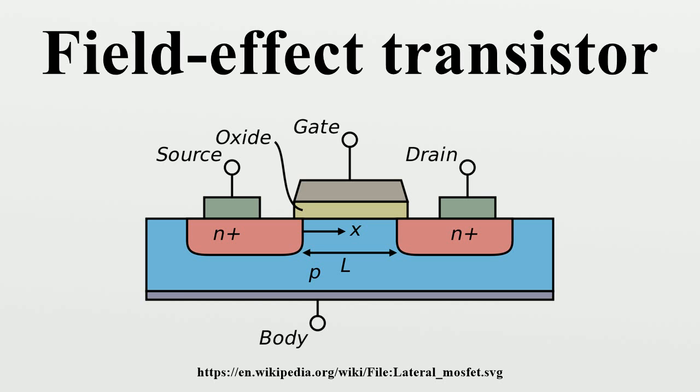Types of FETs include: The JFET uses a reverse-biased PN junction to separate the gate from the body. The MOSFET utilizes an insulator between the gate and the body. The DGMOS FET is a FET with two insulated gates.